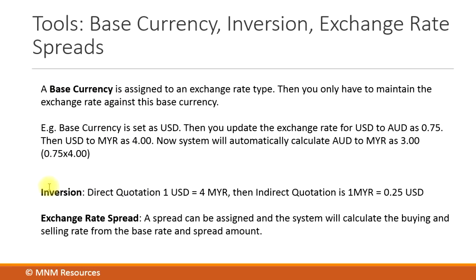The second tool is the inversion method, which usually goes hand in hand with base currency. For example, if you have maintained the currency translation as 1 US dollar equals 4 Malaysian ringgit, the system will automatically calculate that 1 Malaysian ringgit equals 0.25 US dollars — it's simply 1 divided by 4.